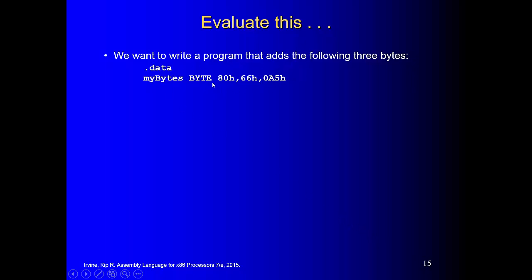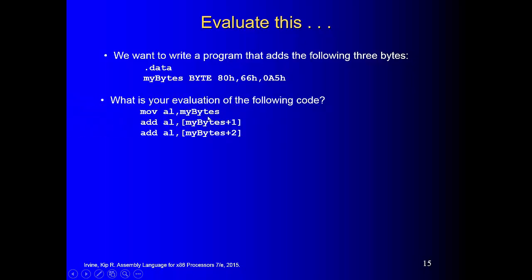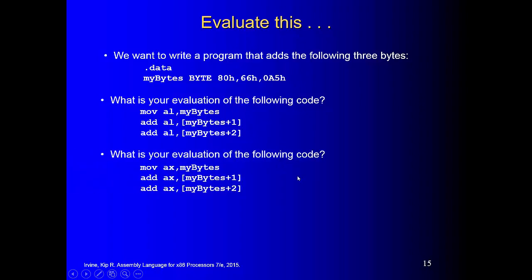Write a program to add up three values — sum up the array. First, copy myArray's first value into AL. Then add AL with myArray plus 1 (adding the second element). Then add AL with myArray plus 2 (adding the third element). These three lines let you add three numbers together. If you call the library function dump registers, you can see the final values. We can try this in Visual Studio.